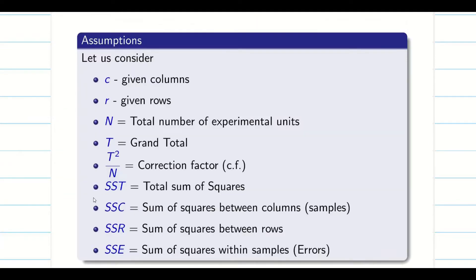Let us recall the notations. All the notations are almost given in one-way ANOVA. C represents column. When we use R, R represents row. N is total number of experimental units. Grand total T squared by N is the correction factor. SST is total sum of squares. SSC is sum of squares between columns. If we say R, it is row, and error.